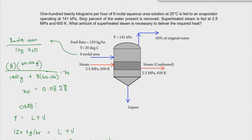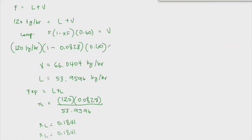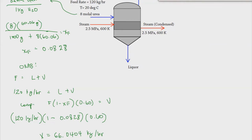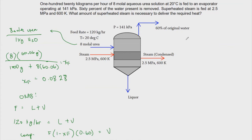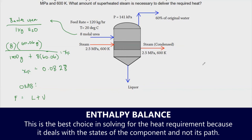Now that the material balance is complete, we need to find the amount of superheated steam using the energy balance or enthalpy balance. In all kinds of unit operations, it is always best to use the enthalpy balance instead of energy balance when you have the data.